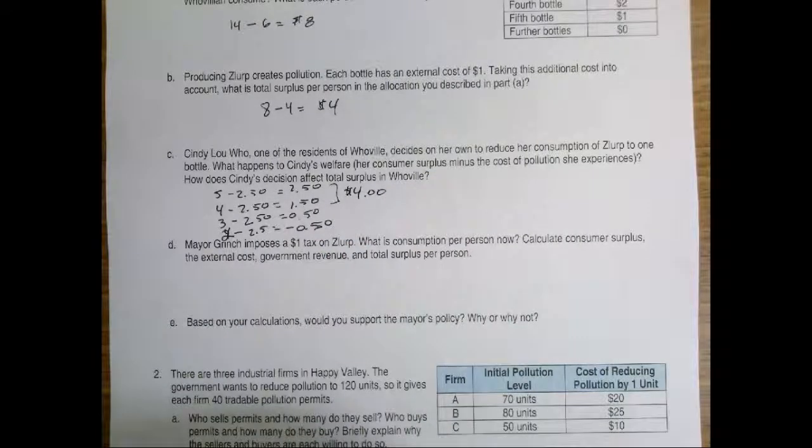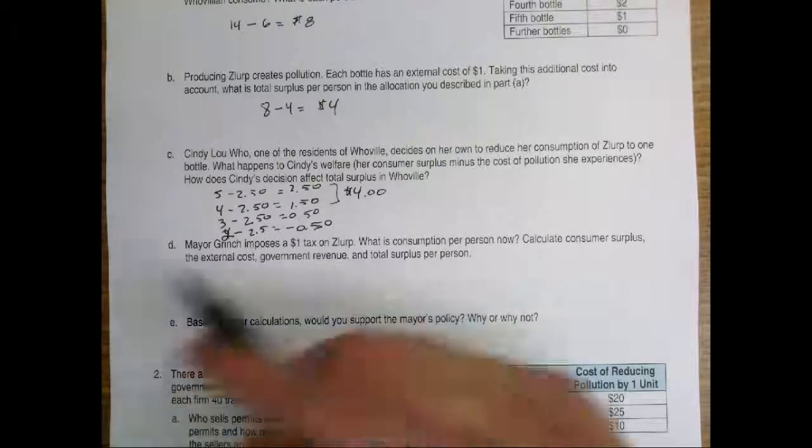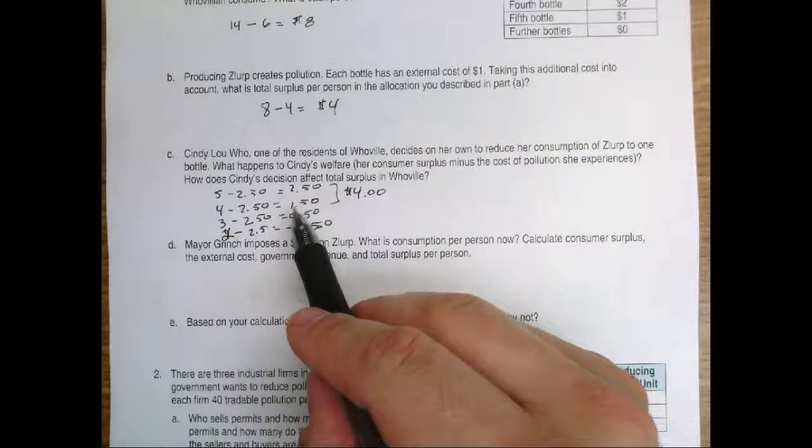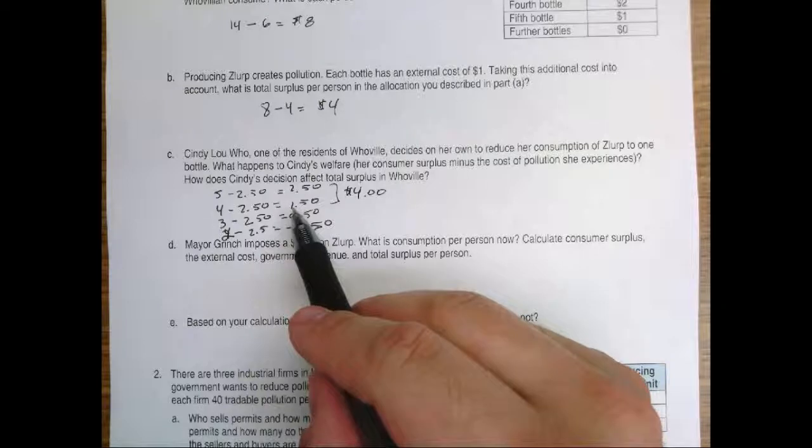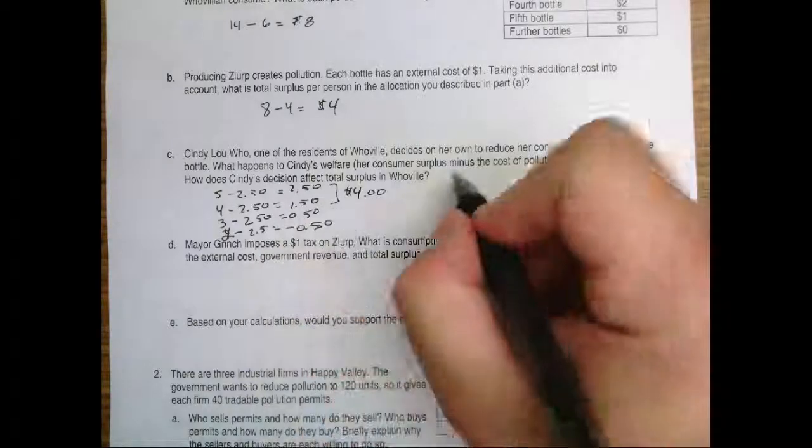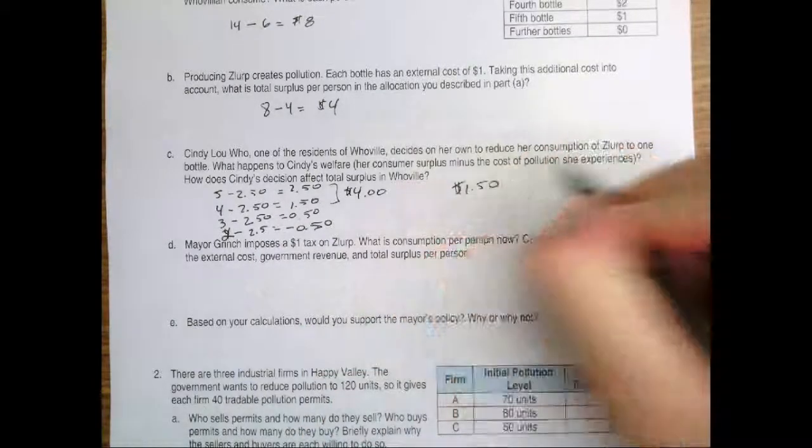But Cindy Lou is choosing to only purchase one bottle of Zlerp. And so she's essentially giving up $1.50 in surplus when she chooses to only purchase one bottle. So the answer here for part C is $1.50.